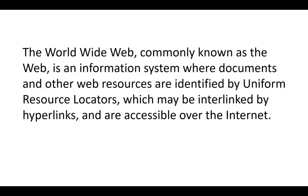What is the meaning of WWW? WWW means Worldwide Web — commonly known as the web — an information system where documents and other web resources are identified by a Uniform Resource Locator, which is called a URL. That's the full meaning of URL — Uniform Resource Locator — which may be interlinked by hyperlinks and are accessible over the internet.